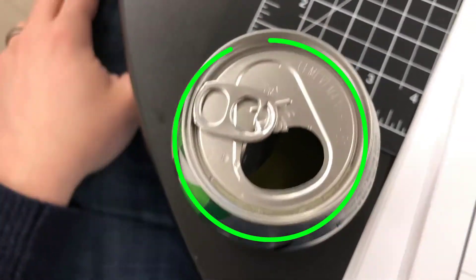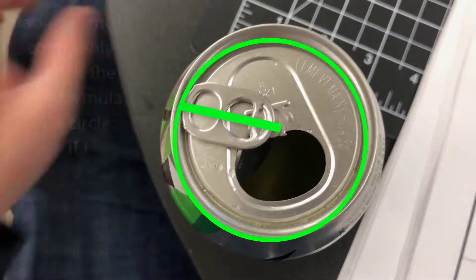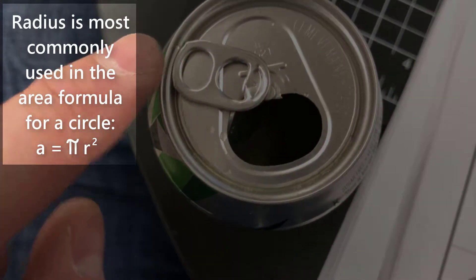But this right here is the radius. The tab actually is the radius from the lip of the can to the center.